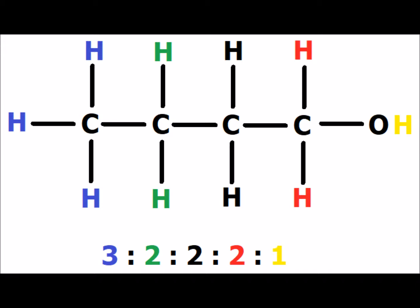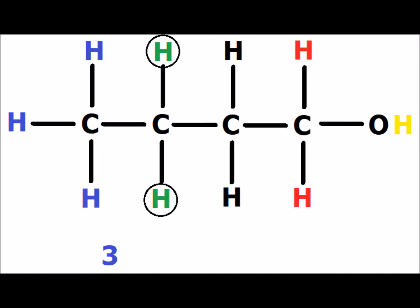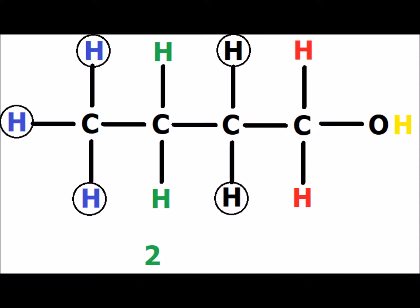1-Butanol has five distinct hydrogen signals, with intensities in the ratios of three to two to two to two to one. The three blue methyl hydrogens have two neighbors, therefore the signal will be a triplet. The green hydrogens have five neighbors — three blue methyls and two black methylenes — again showing that the neighbors do not have to all be of one type. Since this signal has five neighbors, it will be split into a sextet, six sub-peaks.